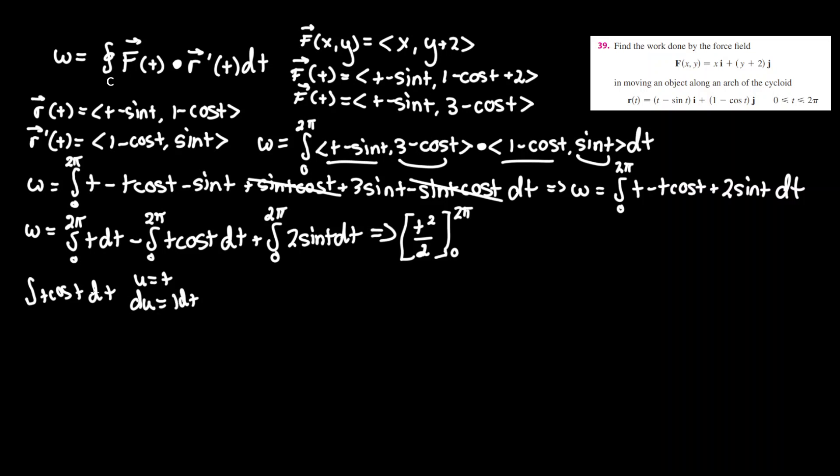You want to kind of leave trig last whenever you do parts, that's one of the last things you have to prioritize. And we take dv equal to cosine t, and v is the integral of cosine t, which is just sine t.